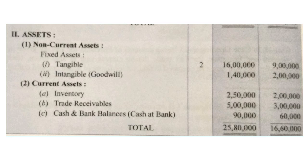Point two: intangible assets — goodwill. The amount of goodwill is decreasing. This decreasing amount is known as goodwill written-off, and this amount will be added in cash flows from operating activities. Current assets — inventory — they are increasing. When any current asset increases, it is treated as a profit reduction, so it will be subtracted in cash flows from operating activities.